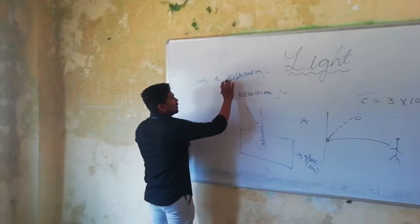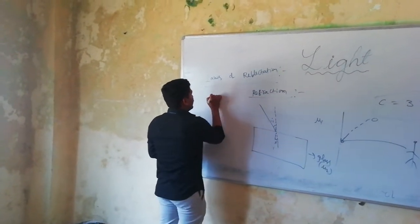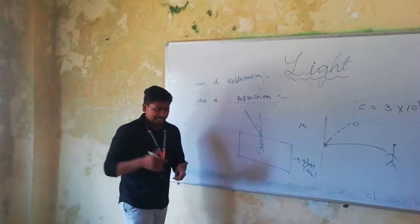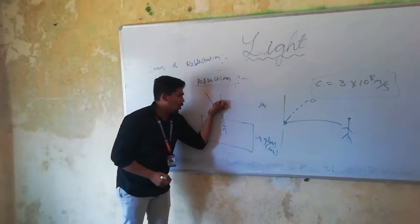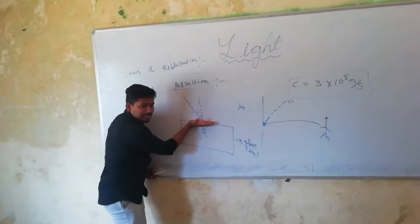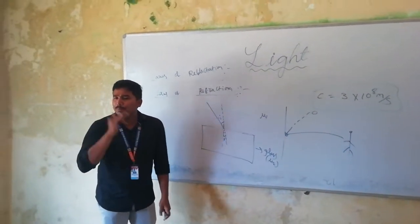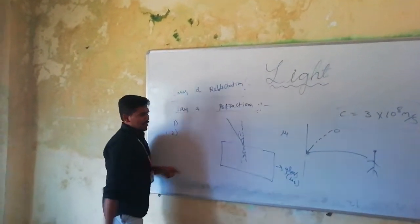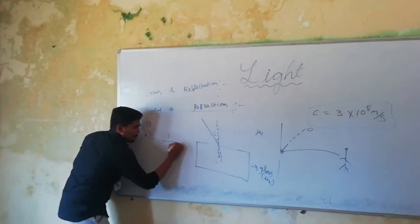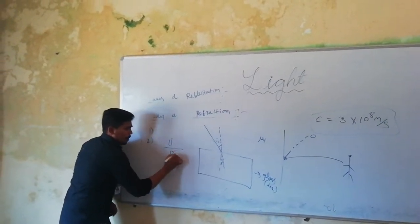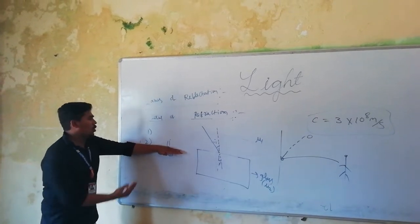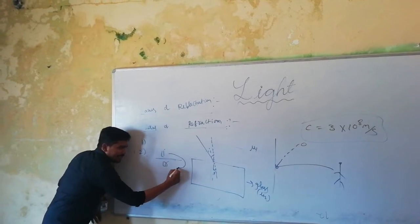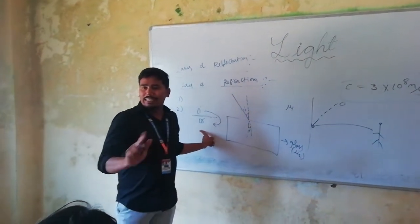We have two laws of refraction. First law: the incident ray, normal ray, and refracted ray lie on the same plane. Second law: the ratio between the angle of incidence to the angle of refraction — this is the second law of refraction.